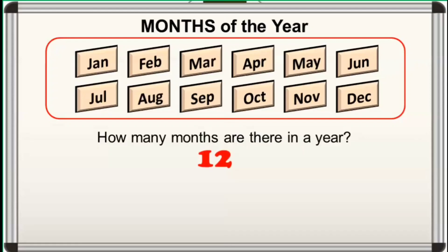For the second question, how many of these months starts with J? That's right! There are 3 months that start with J, and these are January, June, and July.